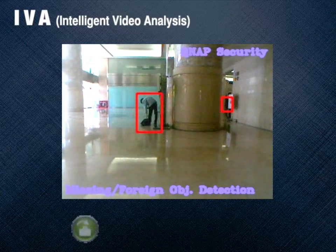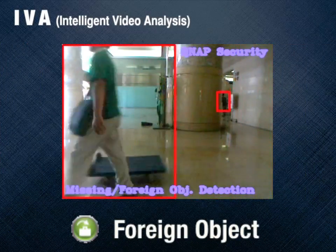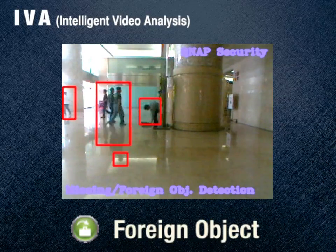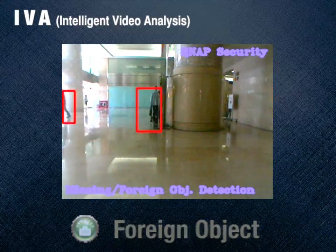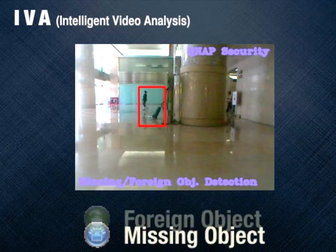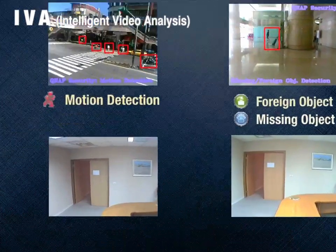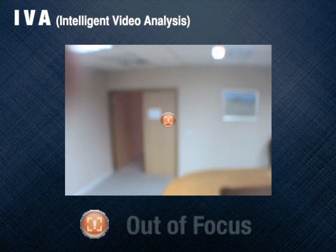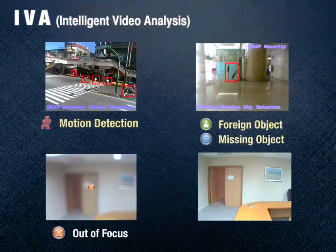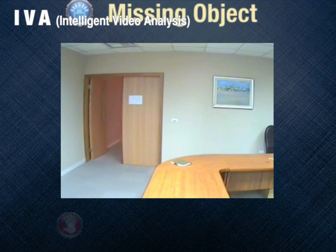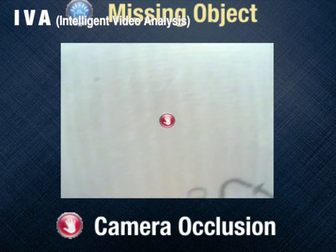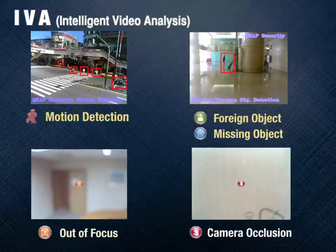Detect new objects — foreign objects are highlighted in yellow brackets. Detect missing objects in the video — the area of the missing object is highlighted in yellow brackets. Detect if the IP camera is out of focus. Detect if the IP camera is obstructed.